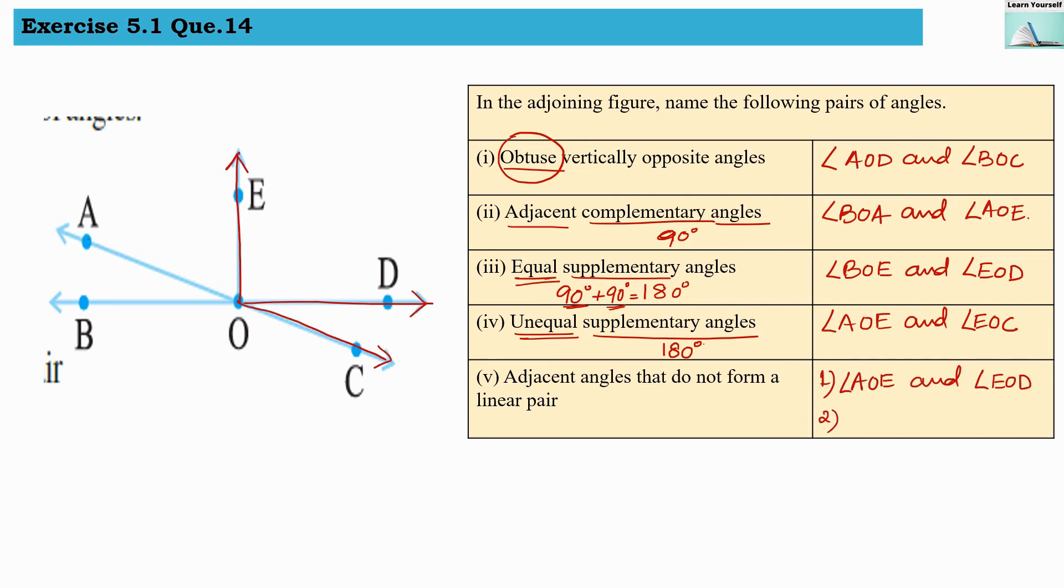Second pair is angle EOD, first angle, and second angle is angle DOC. They are adjacent as well as they are not forming linear pair.